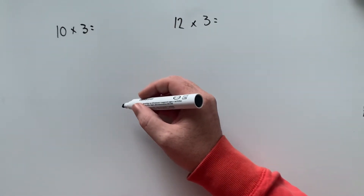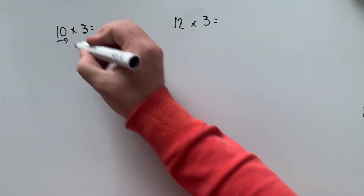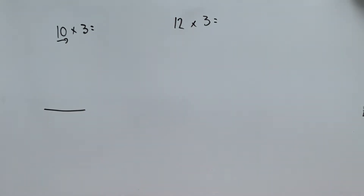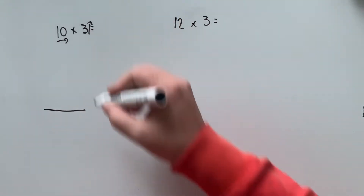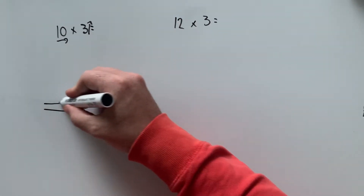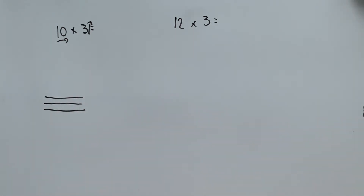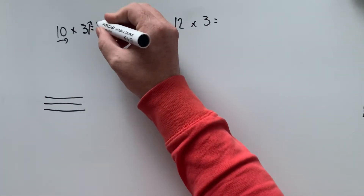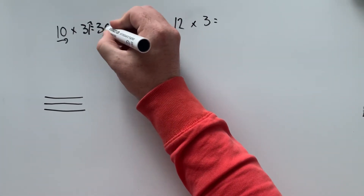So if we represent the first number as the number building across — so it's 10 across — and then this is the number which is building up. We build up three levels of that, and if we just count that, it's 10, 20, 30. So 10, three times is 30.